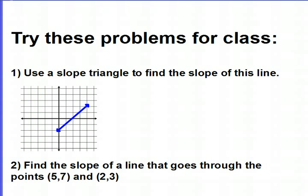I'd like you to try these problems for class. Number 1, use a slope triangle to find the slope of that line. And then number 2, find the slope of a line that goes through the points (5, 7) and (2, 3).